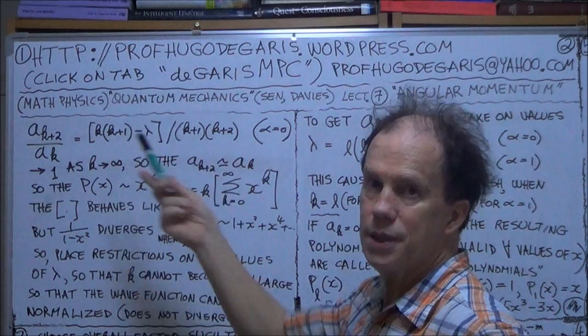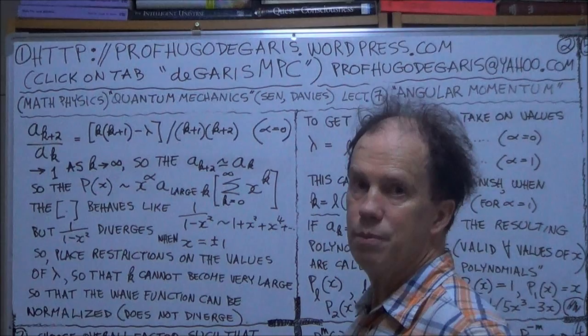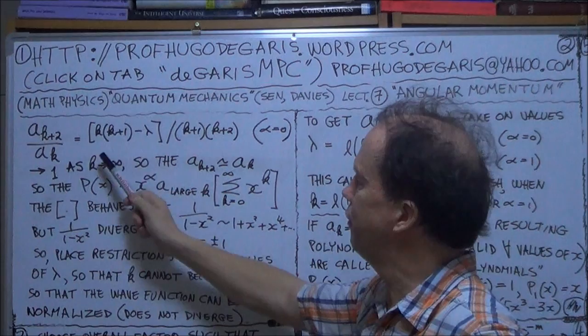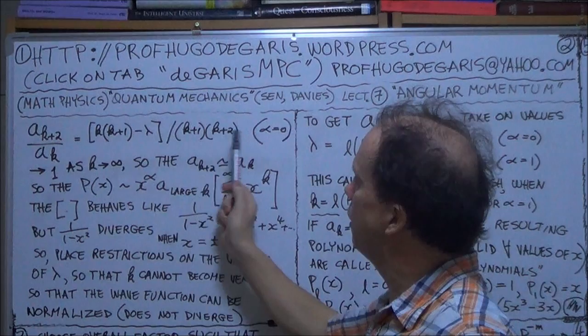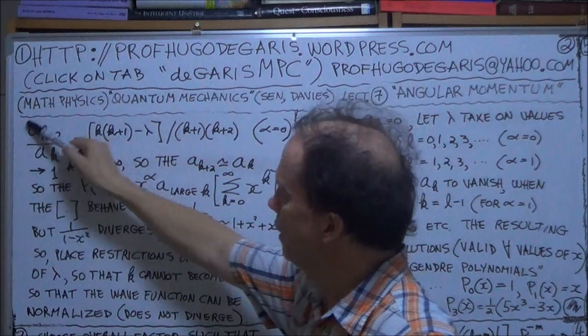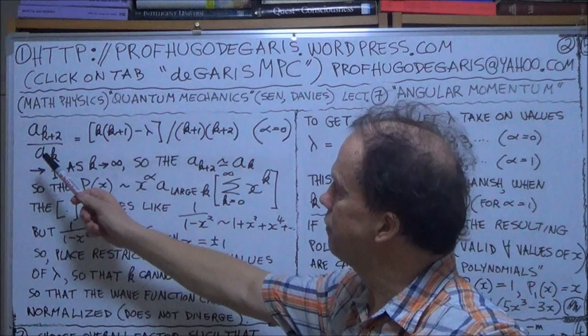As K becomes large, this term here, effectively, becomes 1 in the limit. Why is that? Well, lambda is a constant, so you can forget about lambda. As K becomes very large, this 1 here you can neglect. So, effectively, in the numerator, you have K squared. And similar logic, when K is large, 1 is negligible. So, effectively, the denominator is also K squared. So, as K becomes very large, this ratio here becomes 1.